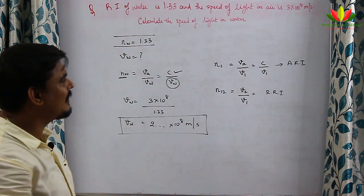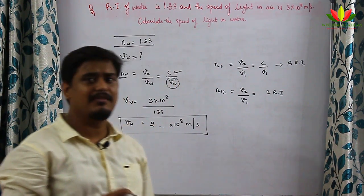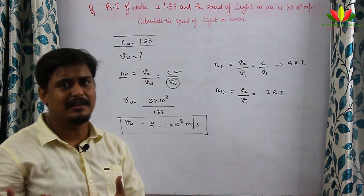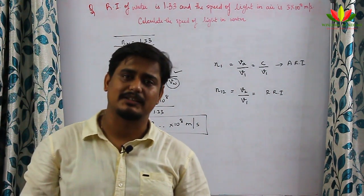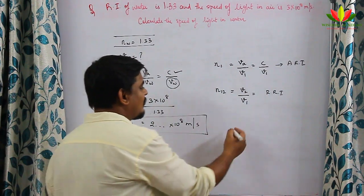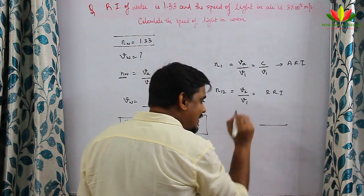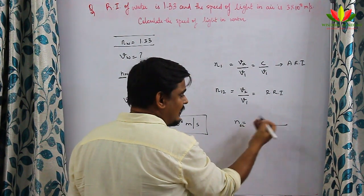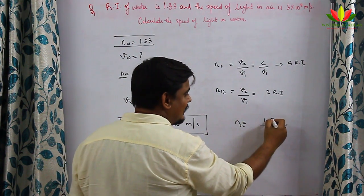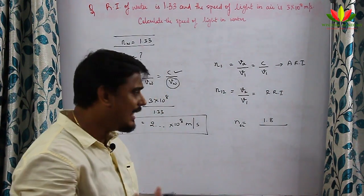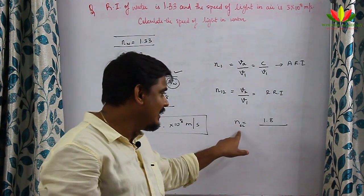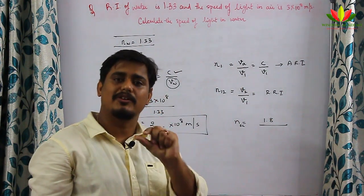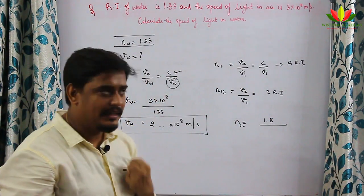This type of question is frequently asked in examinations — finding the velocity of light in some medium using refractive index. Whenever refractive index of a medium is given, say refractive index of oil is 1.8, it means velocity of light in oil is 1.8 times slower than velocity of light in vacuum.